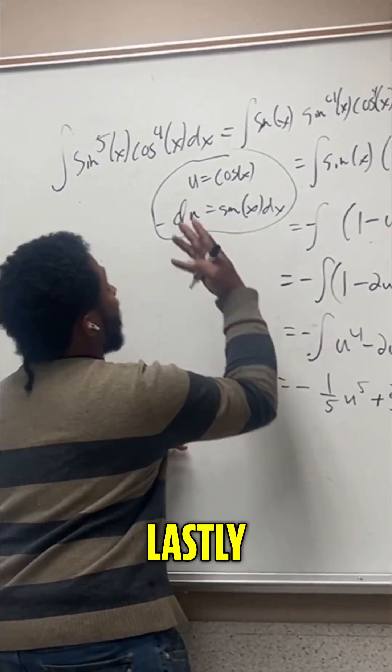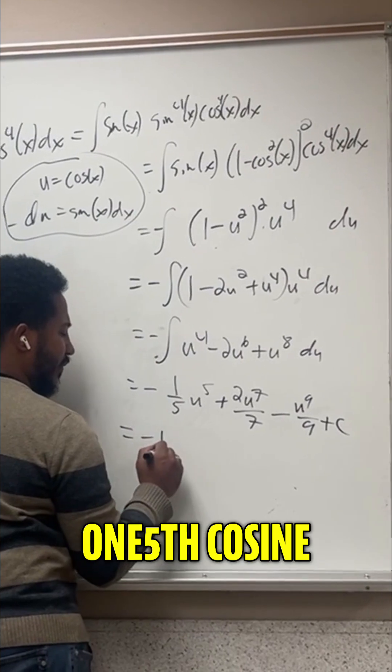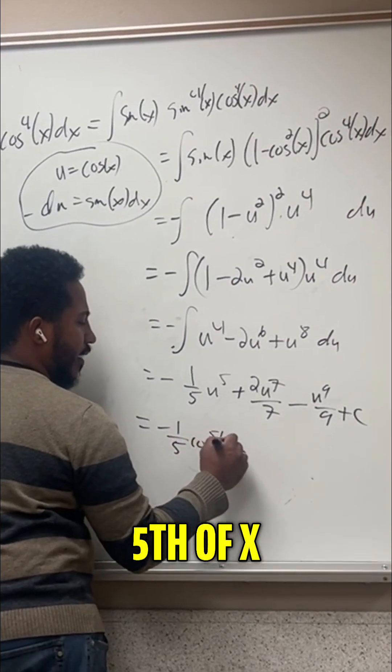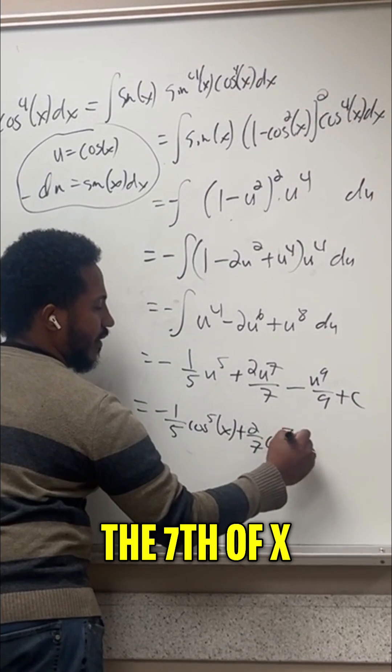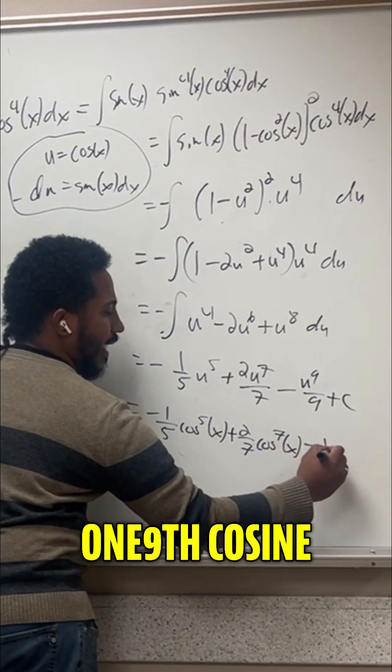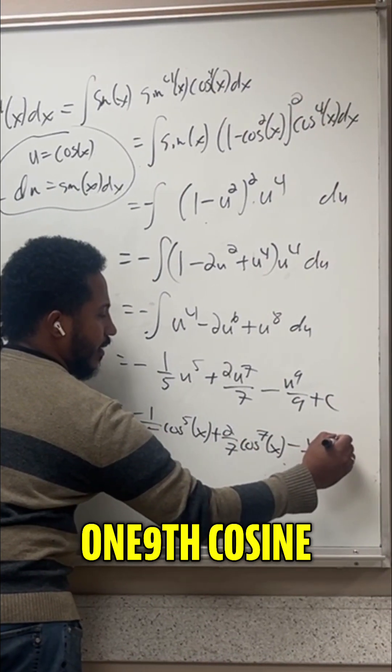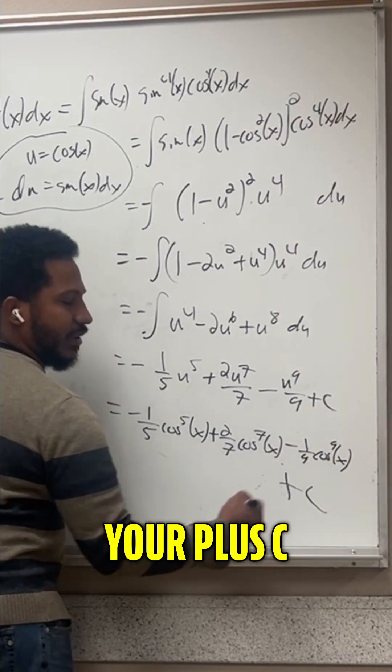We're done integrating, so don't forget the plus c. Lastly, we back substitute. So this becomes negative one fifth cosine to the fifth of x plus two sevenths cosine to the seventh of x minus one ninth cosine to the ninth of x. Don't forget your plus c.